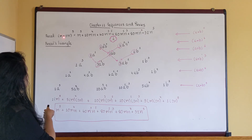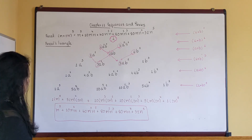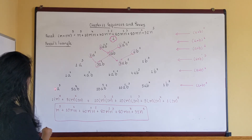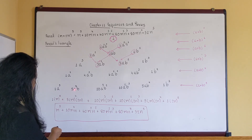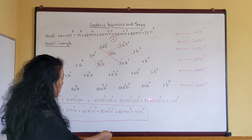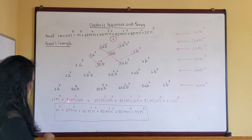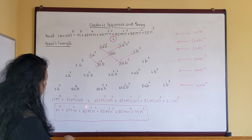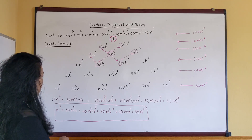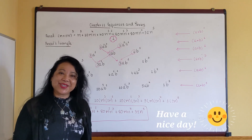My binomial has first term m and second term 2n. Using the fifth row of Pascal's Triangle with coefficients 1, 5, 10, 10, 5, 1: the expansion starts with m to the fifth. The second term: 5 times m to the fourth times 2n equals 10m to the fourth n. Looking at the next: (2n) squared is 4, times 10 gives 40m to the fourth n squared, and so on. As you can see, it's the same answer. We've finished Pascal's Triangle and everything — have a nice summer!